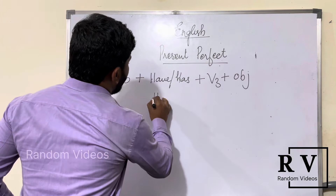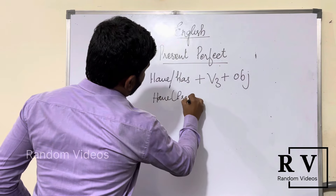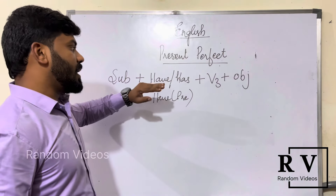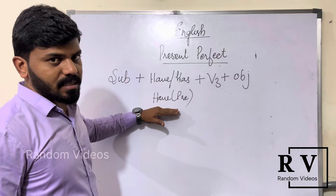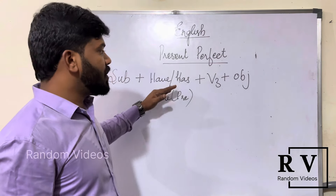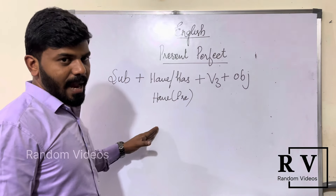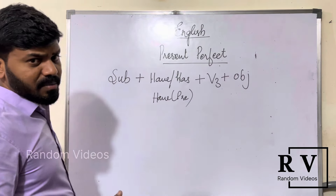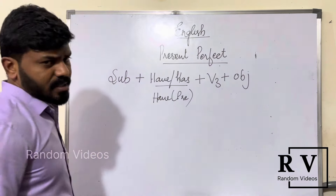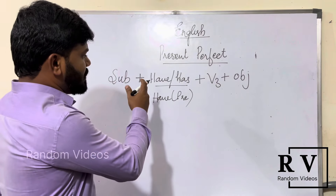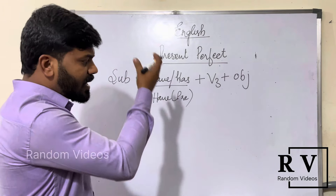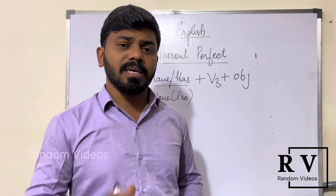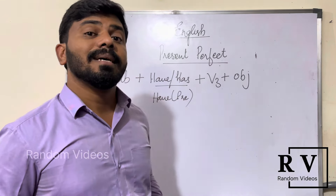I hope you remember the have verb. Since we are discussing present perfect, the have verb can only be used in the present form. Have and has are present forms, and had is a past form — I told you this in the last video. Have and has have no difference in meaning; we shall look at when to use each while writing examples.